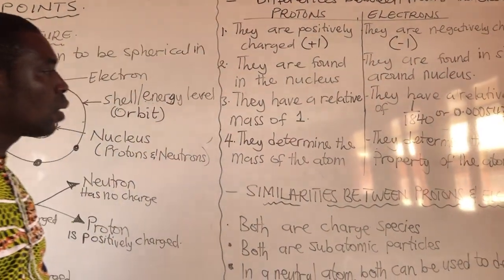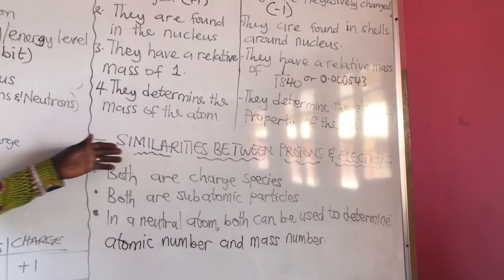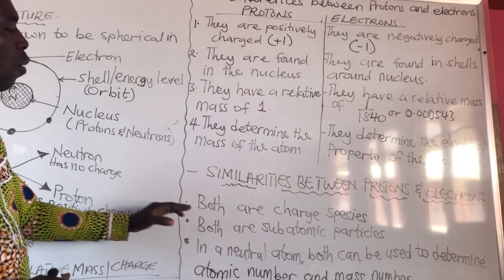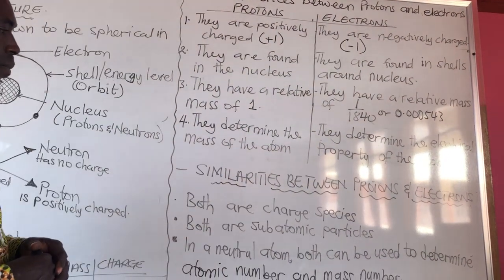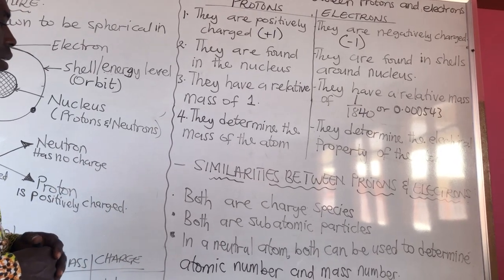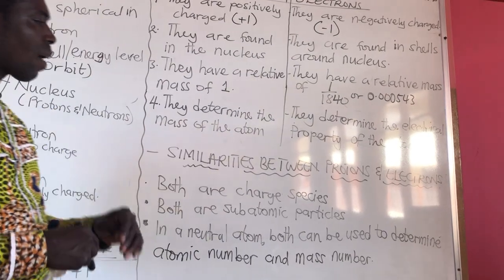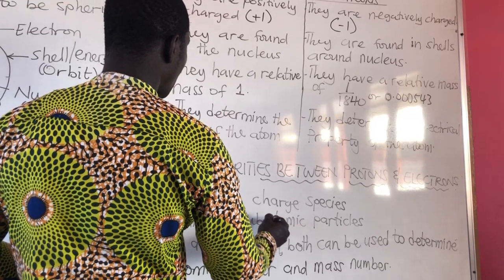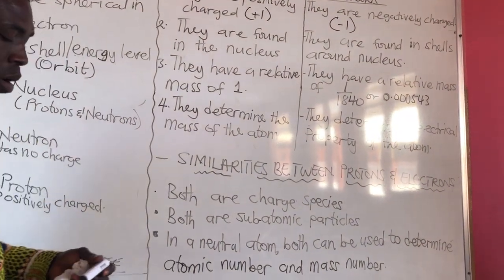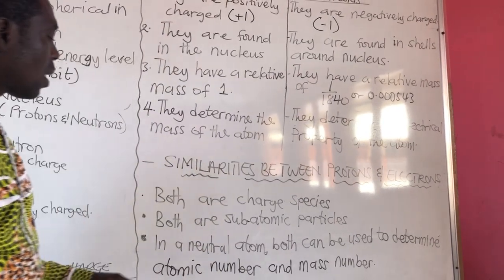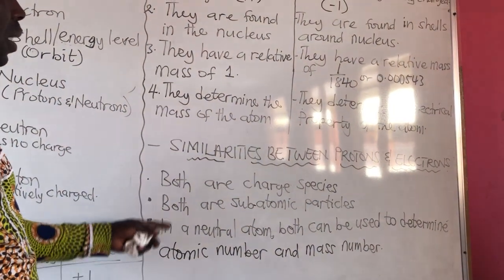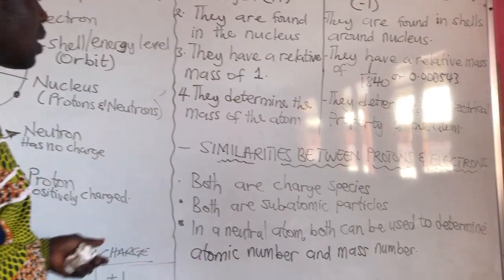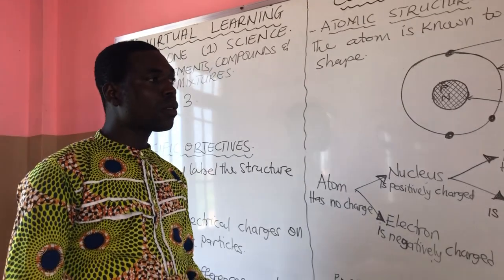Now let's look at the similarities between protons and electrons — what they have in common. First, both are charged species or particles. Second, both are subatomic particles. Third, in a neutral atom, both can be used to determine the atomic number and mass number. These are the similarities between protons and electrons.